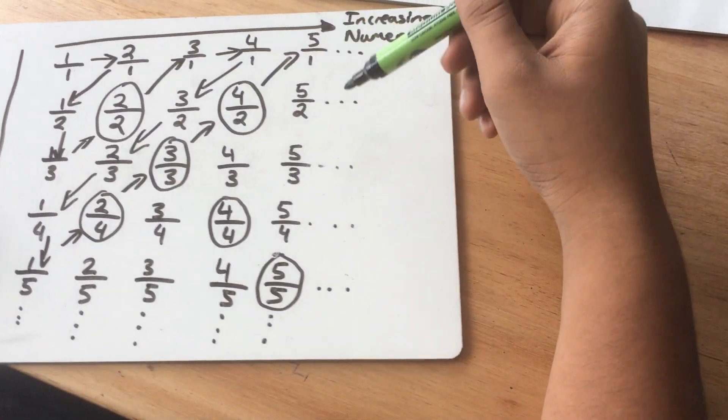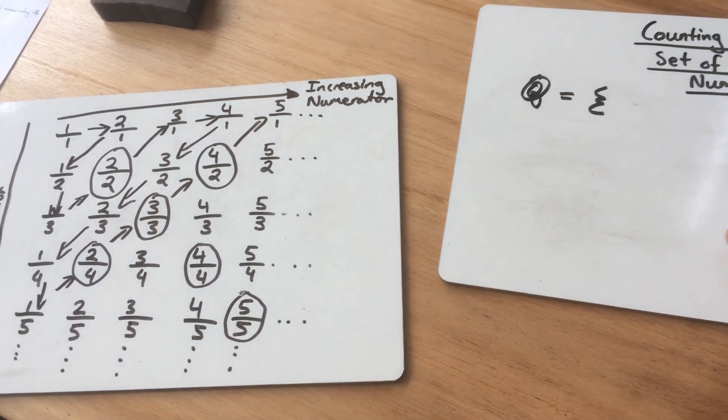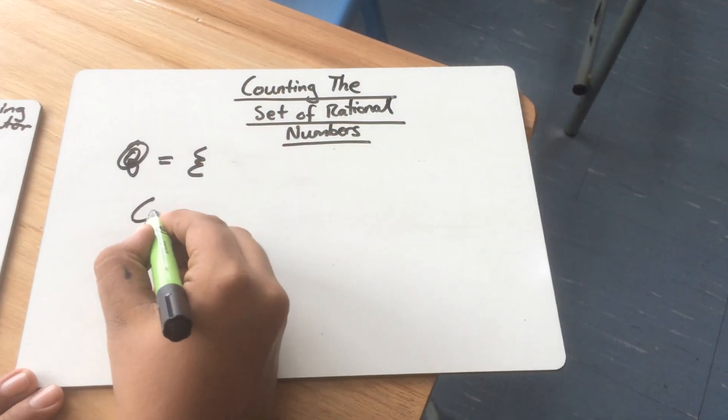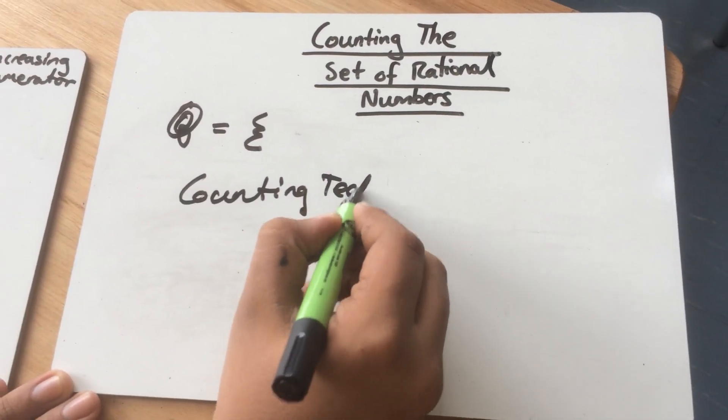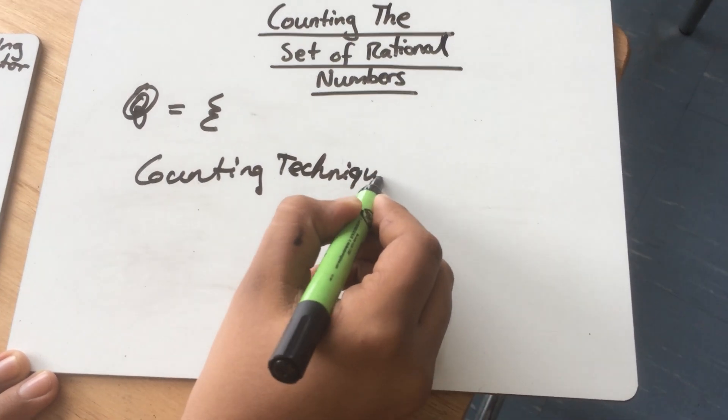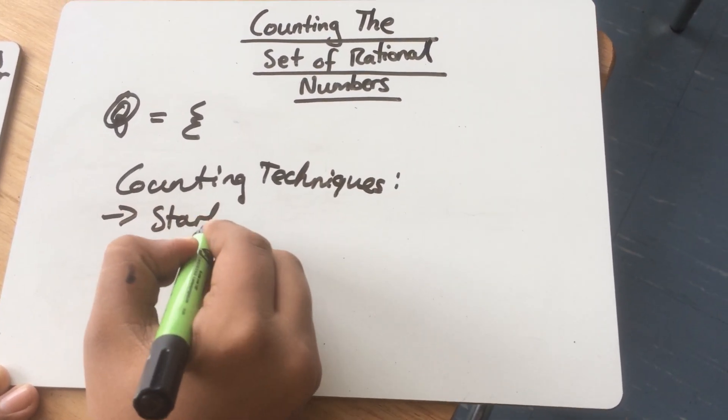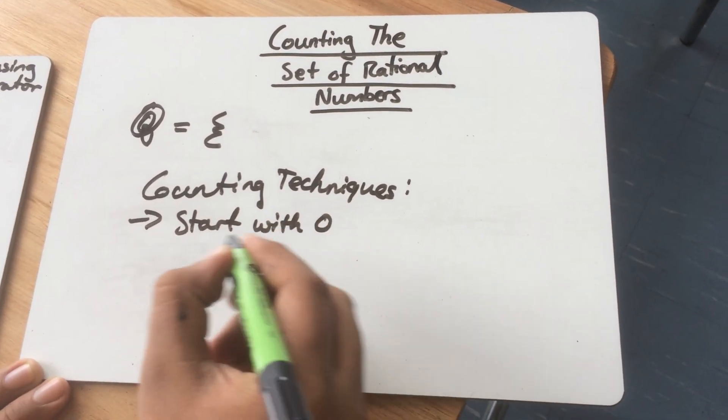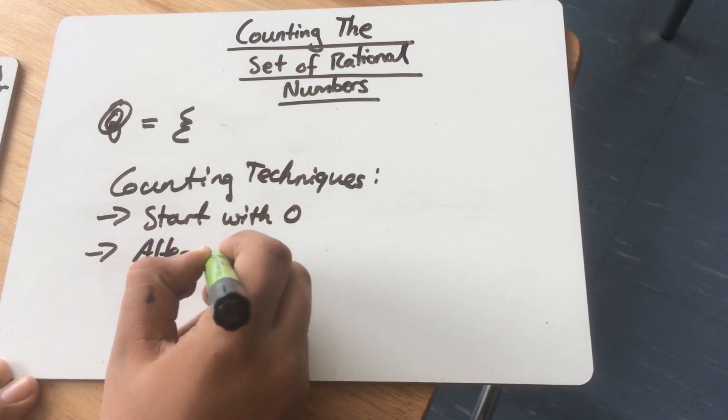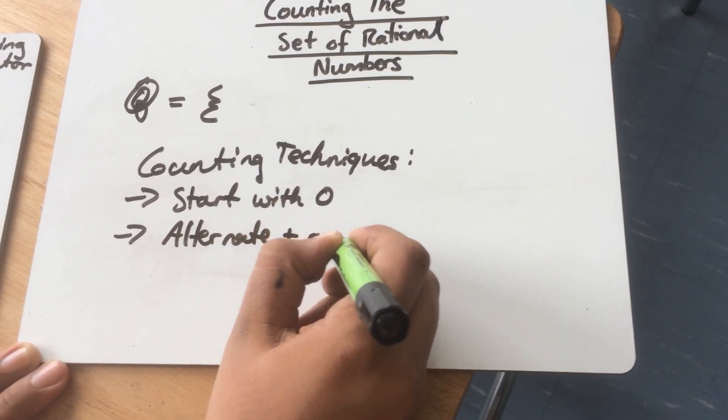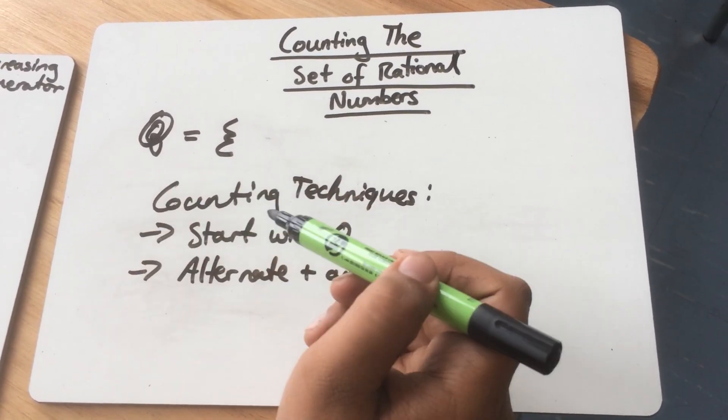But if you've noticed, these are all the positive rational numbers. There's still 0 and the negative rational numbers. So we have certain counting techniques that we've learned. From the natural numbers, we learned to start with 0. And then from the integers, we learned to alternate between positive and negative elements.